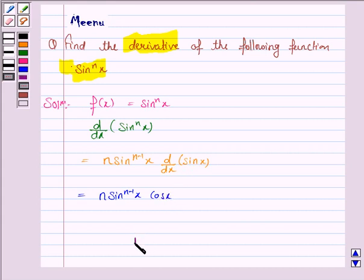Hence, the derivative of the given function is n into sin x to the power n minus 1 into cos x.